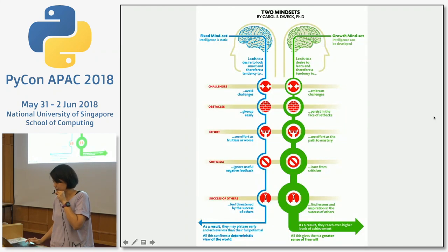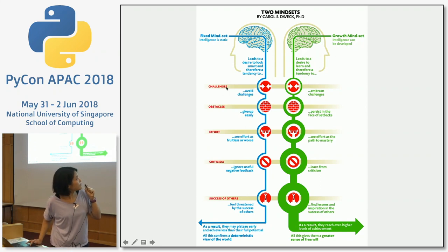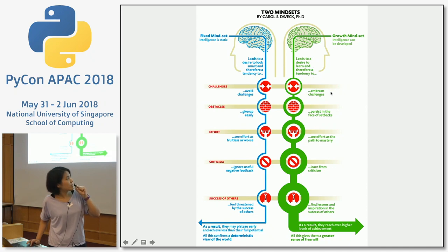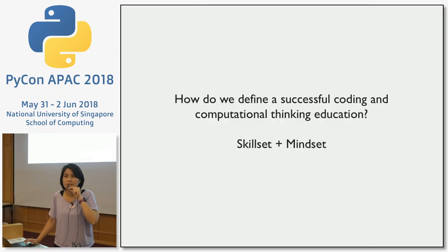Here is a diagram found in Carol Dweck's work. Fixed mindset: intelligence is static. Growth mindset: intelligence can be developed. The fixed mindset leads to a desire to look smart, and therefore a tendency to avoid challenges, give up with obstacles, and see effort as something negative. The growth mindset leads to a desire to learn, and therefore a tendency to embrace challenges, persist in the face of setbacks, and see effort as a path to mastery.